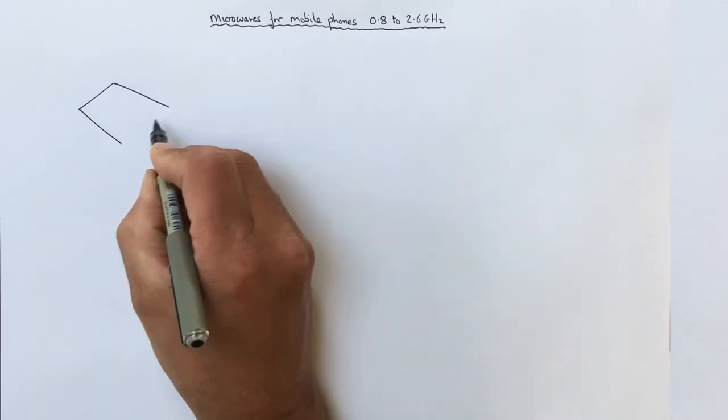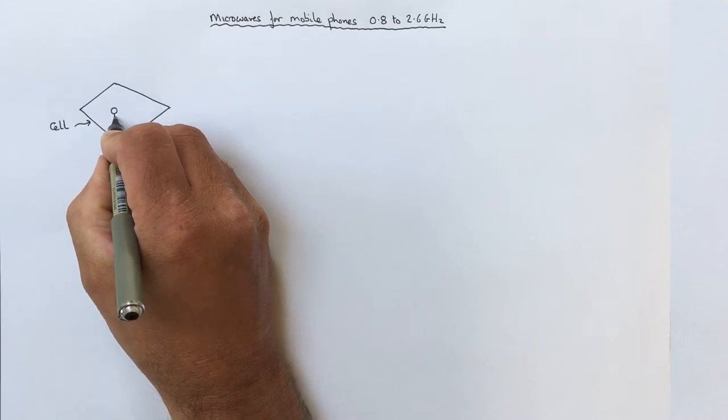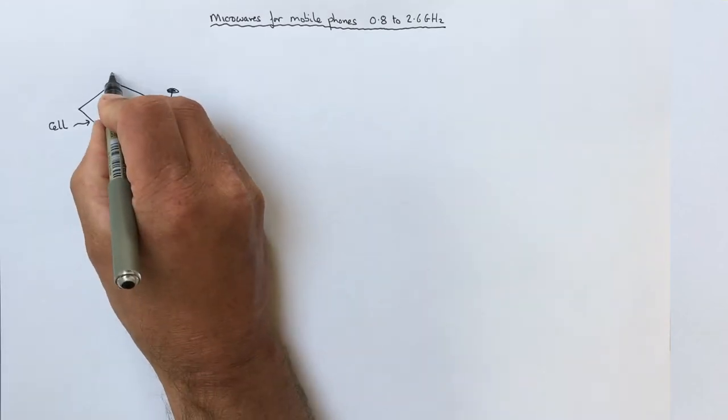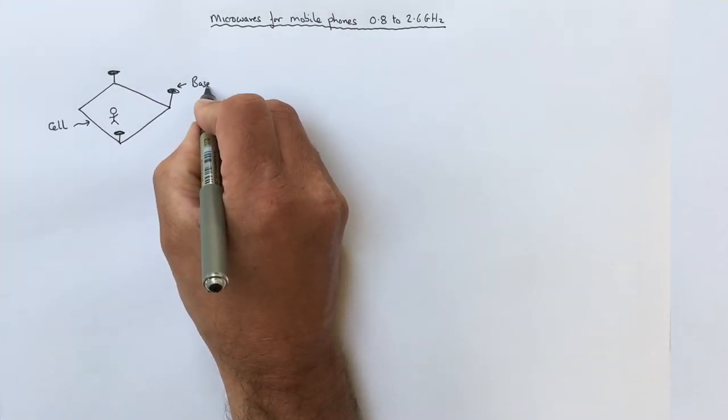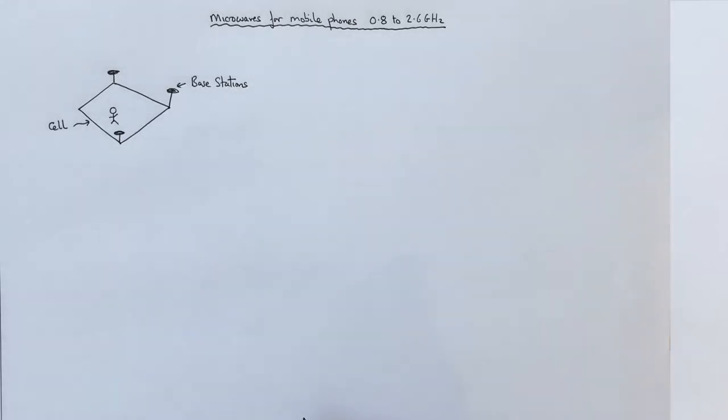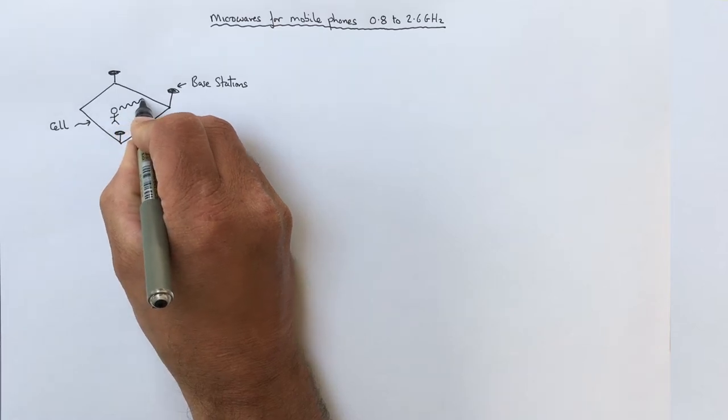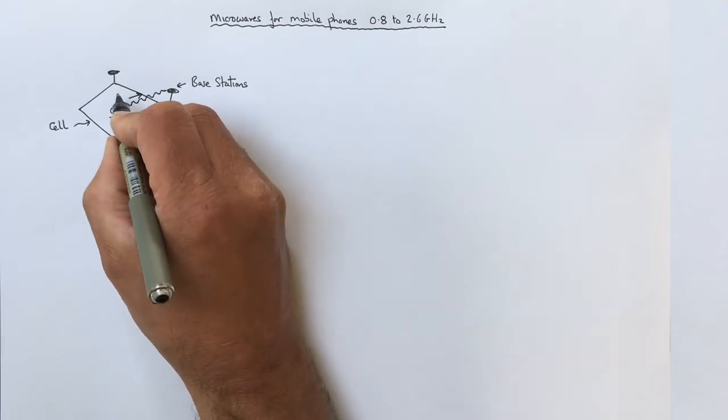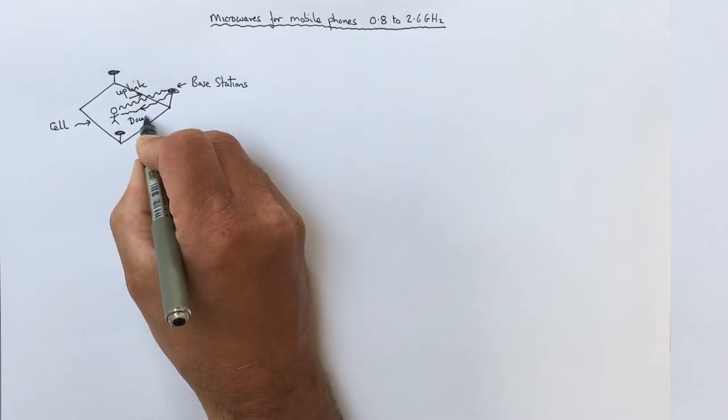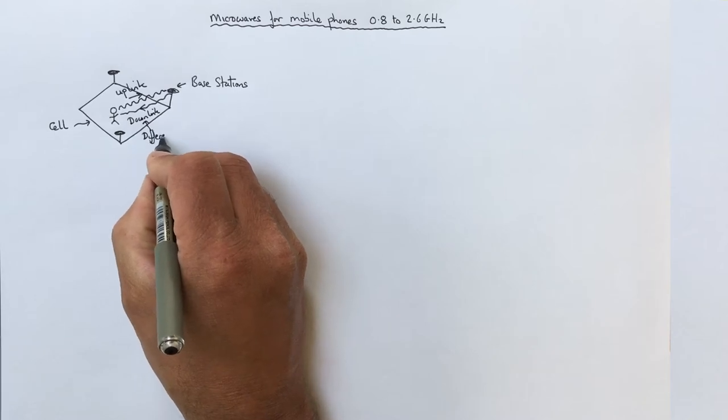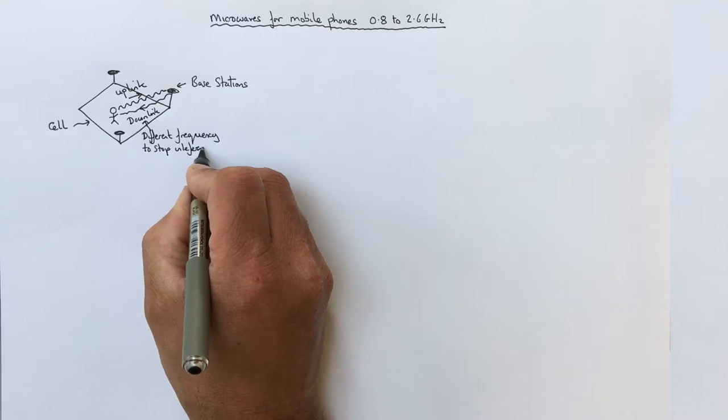Well all of the country is divided into cells and these cells are different sizes. Within a cell you have base stations around the edge and when you go to phone you send a signal uplink to the base station. So if you're talking you will be sending a signal to the base station. That base station will send it on to where it needs to go and then a different frequency will be used to downlink to send a message back to you, for example, a conversation back or a text back to you.